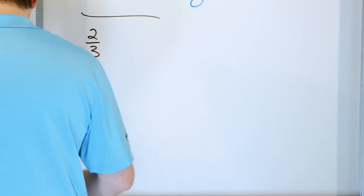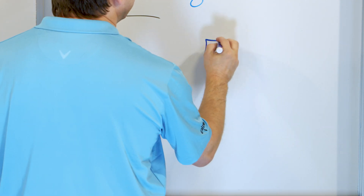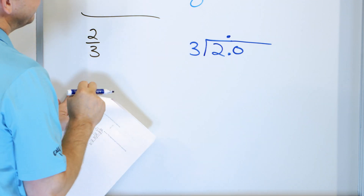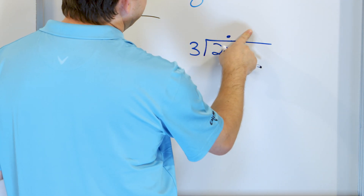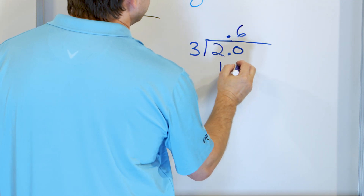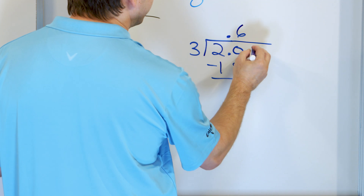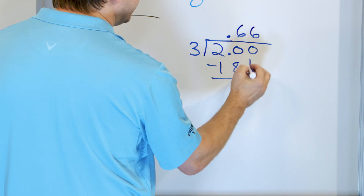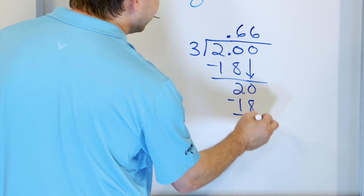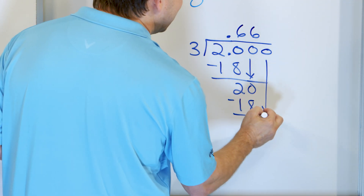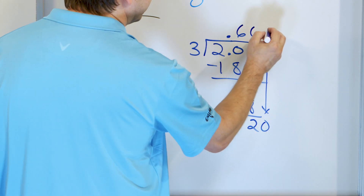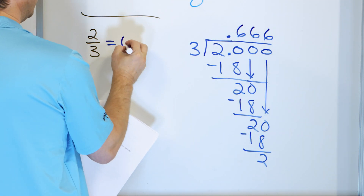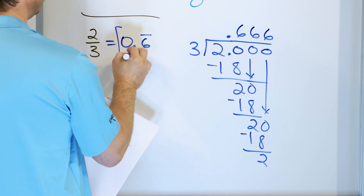Our last problem is a repeating decimal — two thirds. We take 2 and divide by 3, making it 2.0 with a decimal in the answer. 3 times 6 is 18, the closest we can get to 20. Subtract: 20 minus 18 is 2. Add a zero and bring it down. Again 3 times 6 is 18 — remainder 2 again. The pattern is clear: we keep getting 6s forever. So two thirds is 0.6 with a repeating bar over the 6.